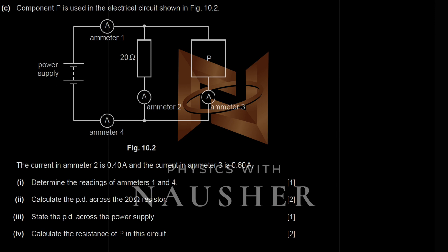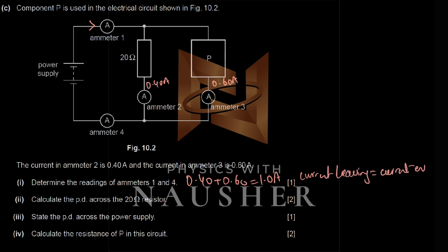The current at ammeter 2 is 0.4 A and at ammeter 3 is 0.6 A. Ammeter 1 reads the total current from the battery: 0.4 + 0.6 = 1 ampere. Remember, the current leaving a cell must equal the current entering the cell, so ammeter 4 also reads 1 ampere.